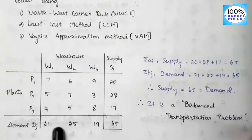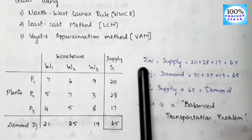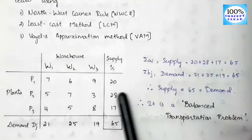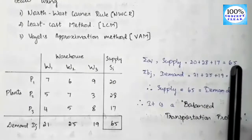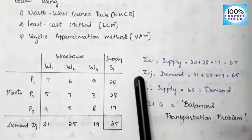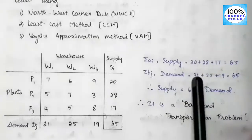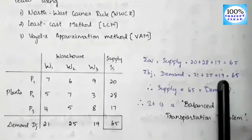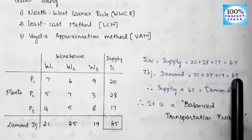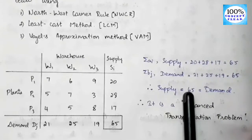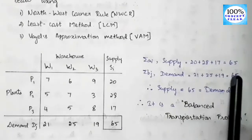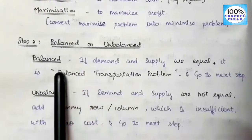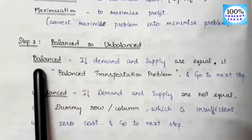Now let's check whether our problem is balanced or unbalanced. The summation of supply (Σai) is 20 + 28 + 17 = 65, and the summation of demand (Σbj) is 21 + 25 + 19 = 65. Since supply equals demand (65 = 65), this is a balanced transportation problem. We proceed to step 3.